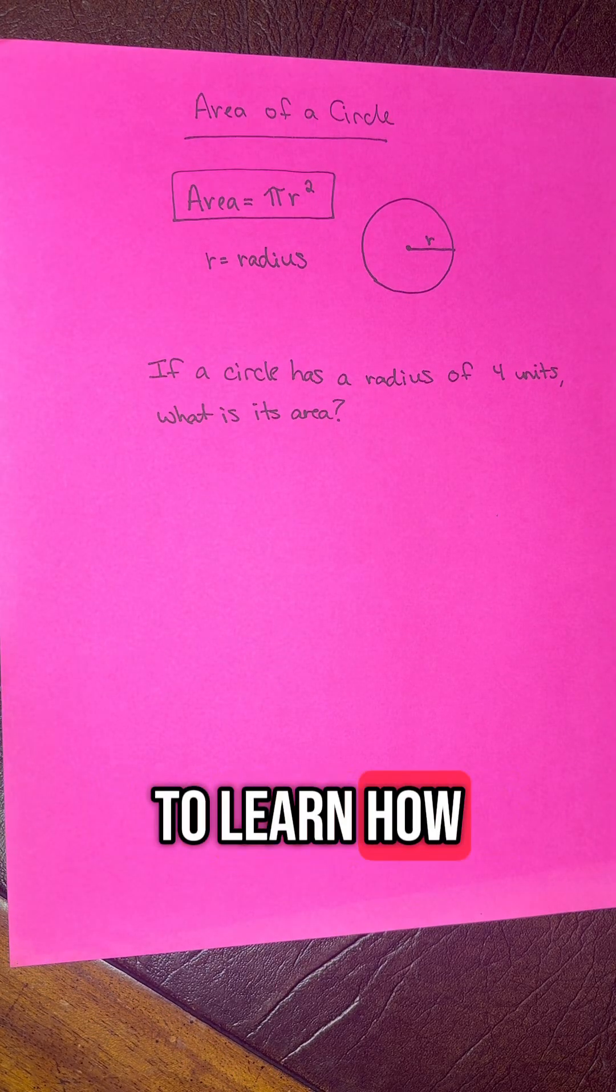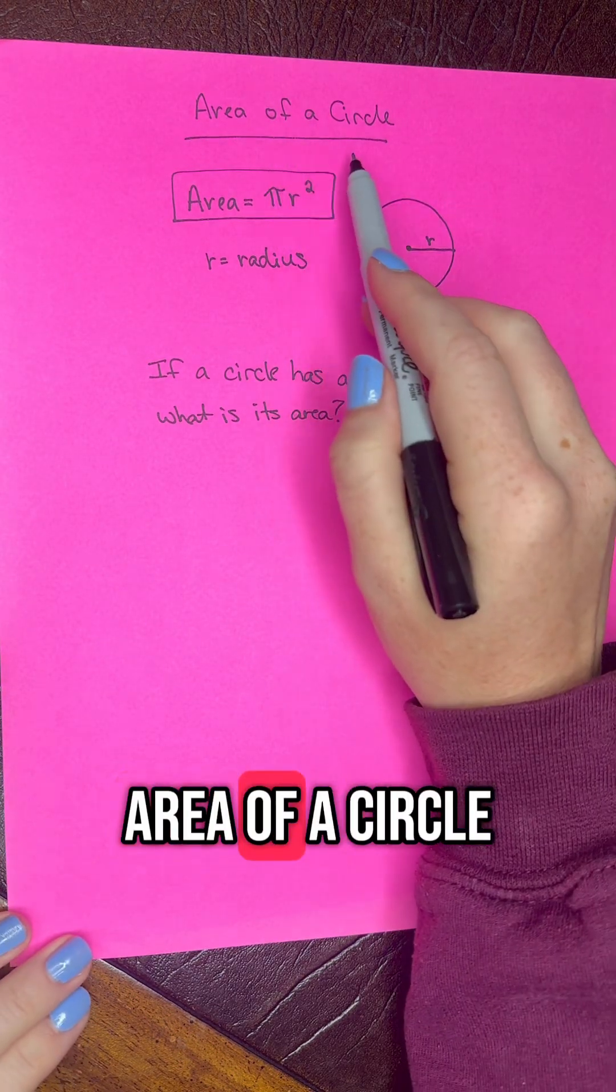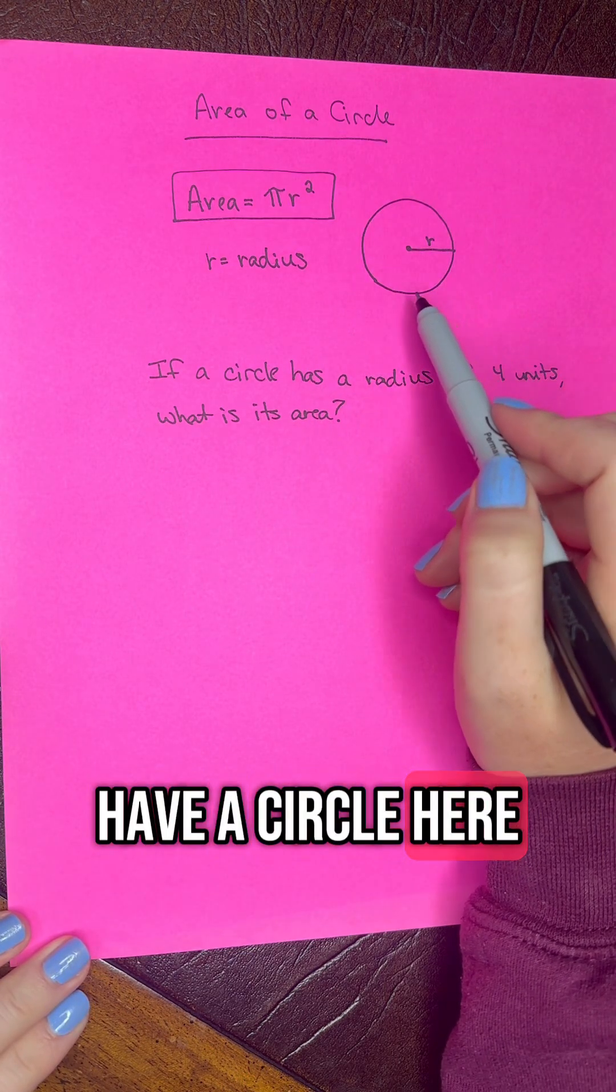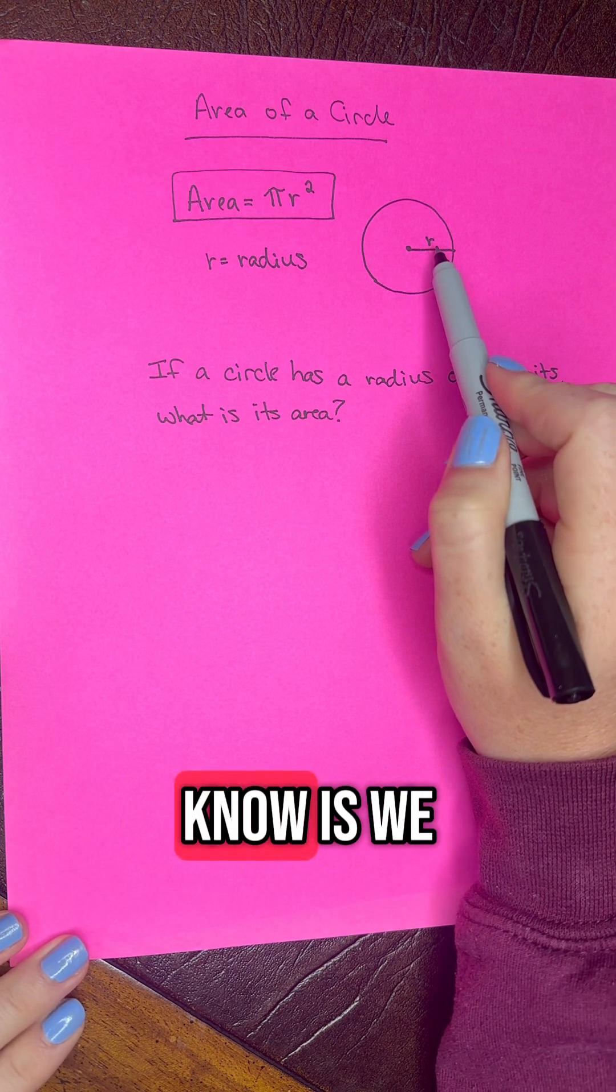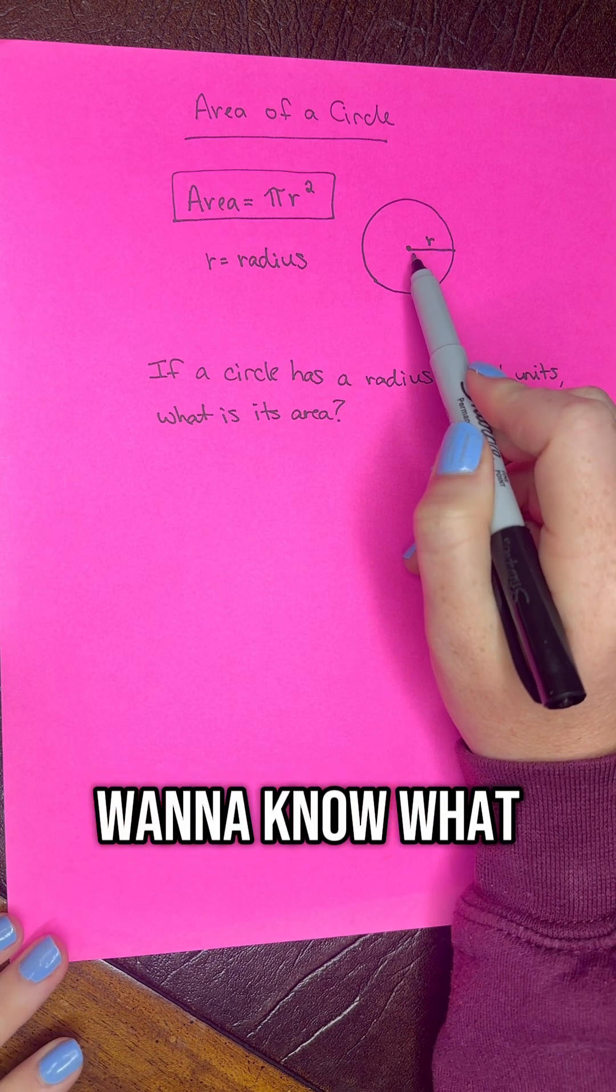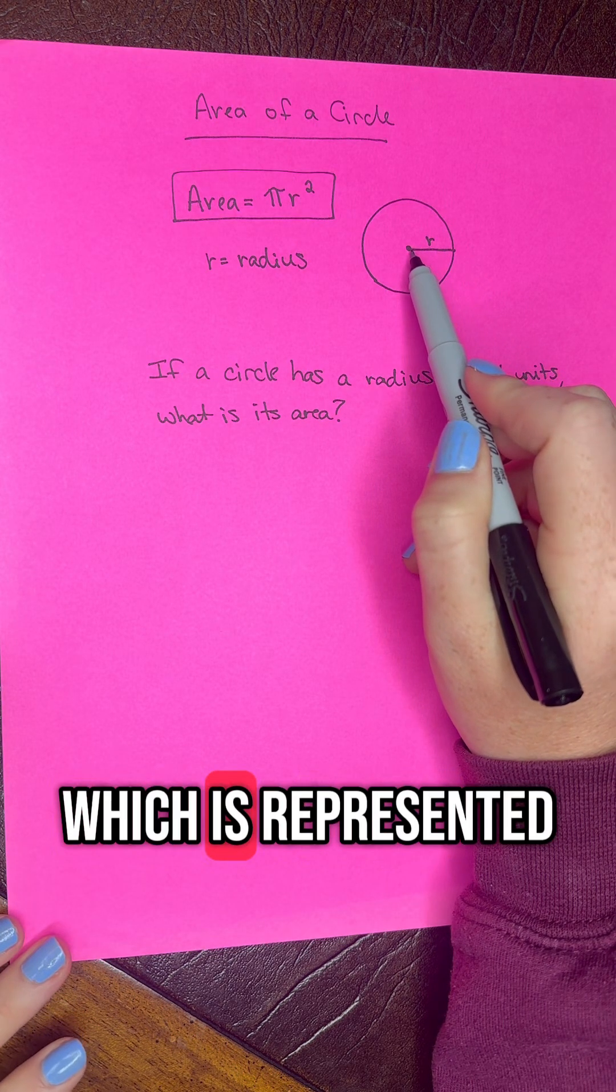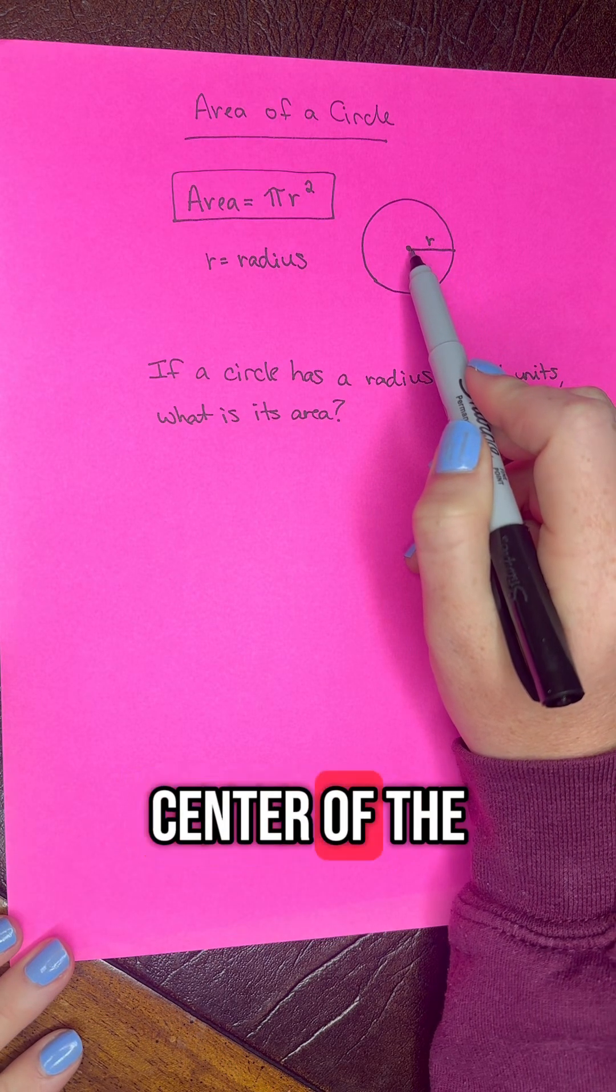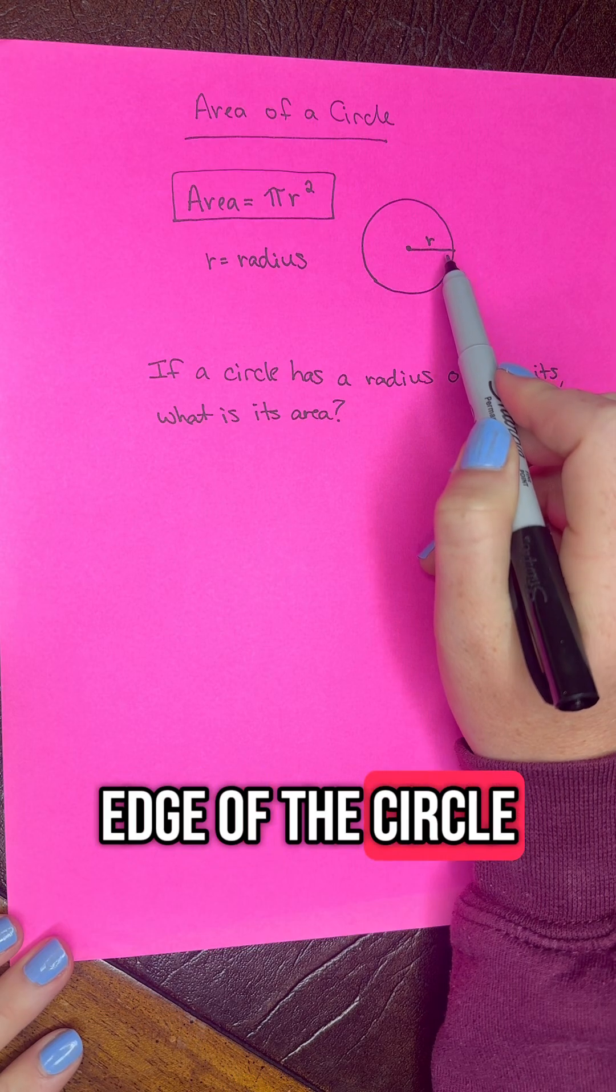Today we're going to learn how to find the area of a circle. If we have a circle here, the first thing we want to know is the radius, which is represented by this line here going from the center of the circle to the edge of the circle.